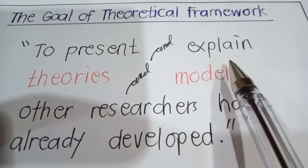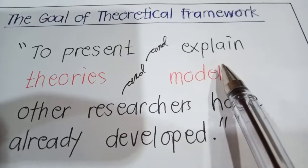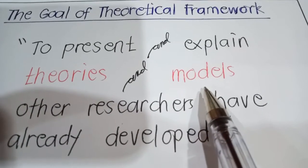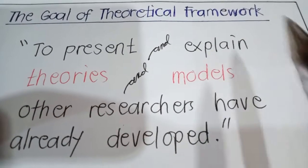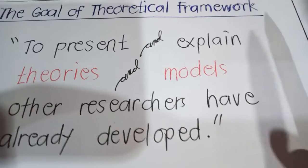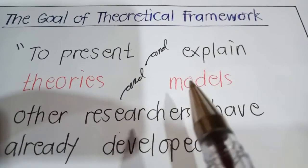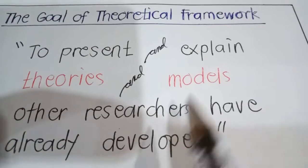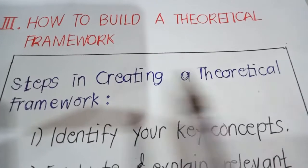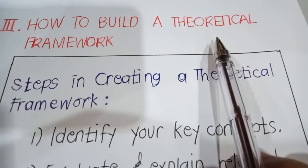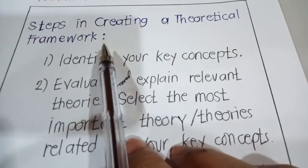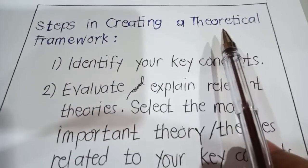By framing your research within a clearly defined field, you make the reader aware of the assumptions that inform your approach, showing the rationale behind your choices. This part of your dissertation or thesis lays the foundations that will support your analysis, helping you interpret your results and make broader generalizations. The next key area is how to build a theoretical framework, and we need to strictly follow three steps in creating one.